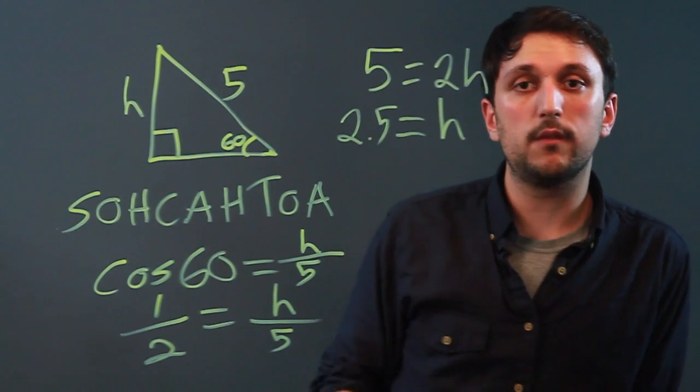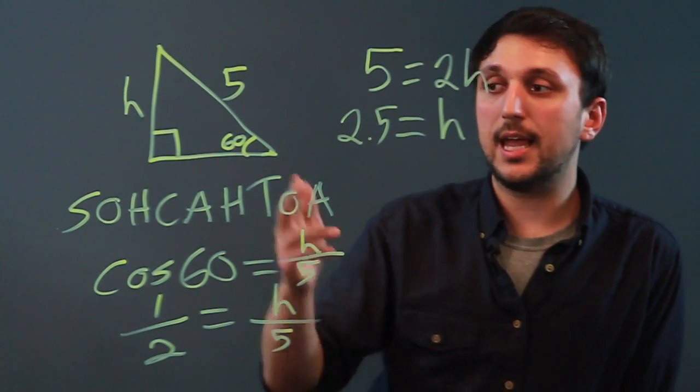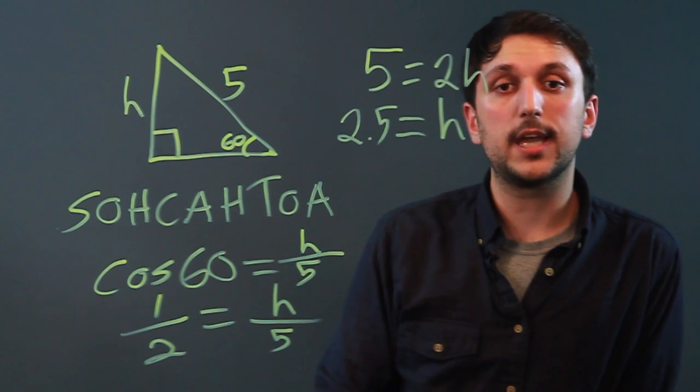So the height is 2.5 and that is how you find the height when the angle and the length are known. I'm Charlie Kasov. Thanks a lot.